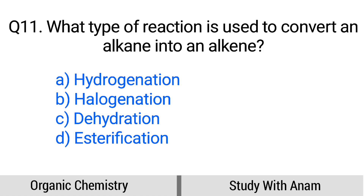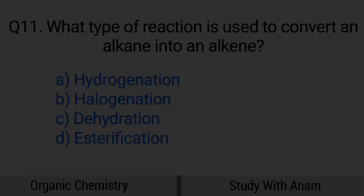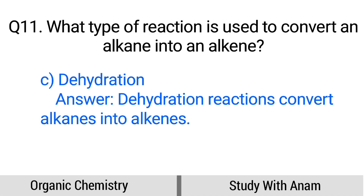Question number 11. What type of reaction is used to convert an alkane into an alkene? Option A: Hydrogenation, B: Halogenation, C: Dehydration, D: Esterification. The correct option is option C, Dehydration. A dehydration reaction converts alkanes into alkenes.